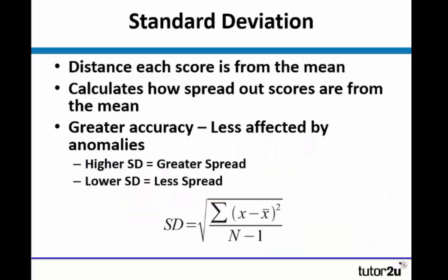Standard deviation, however, is the distance each score is from the mean. And what it does is calculates how spread out the scores are from the mean. And it has much greater accuracy because all scores are involved in the calculation and therefore it can be less affected by anomalies.